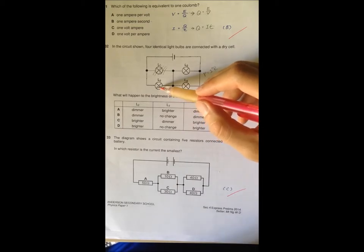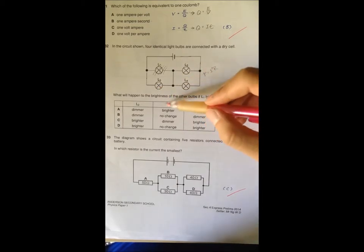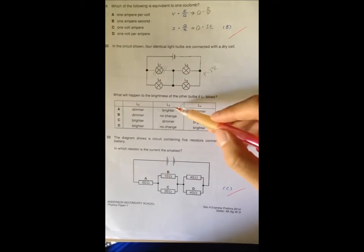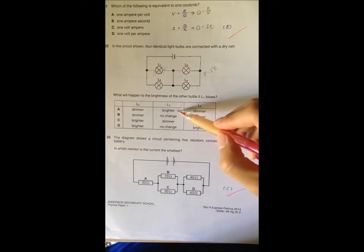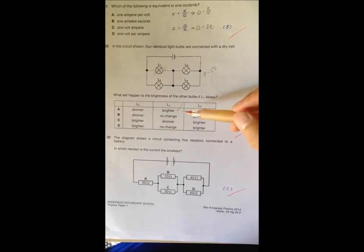And the answer is actually quite linear. If you look at all your options here, there's only one option where L3 is brighter. So with that you know the answer is A.